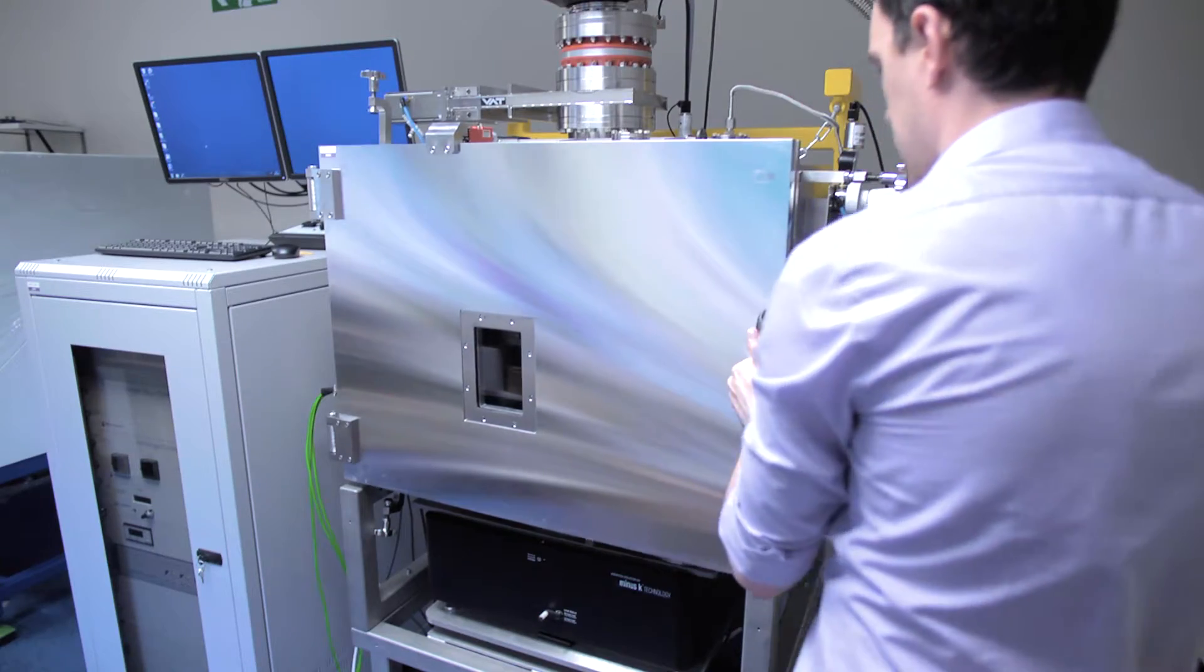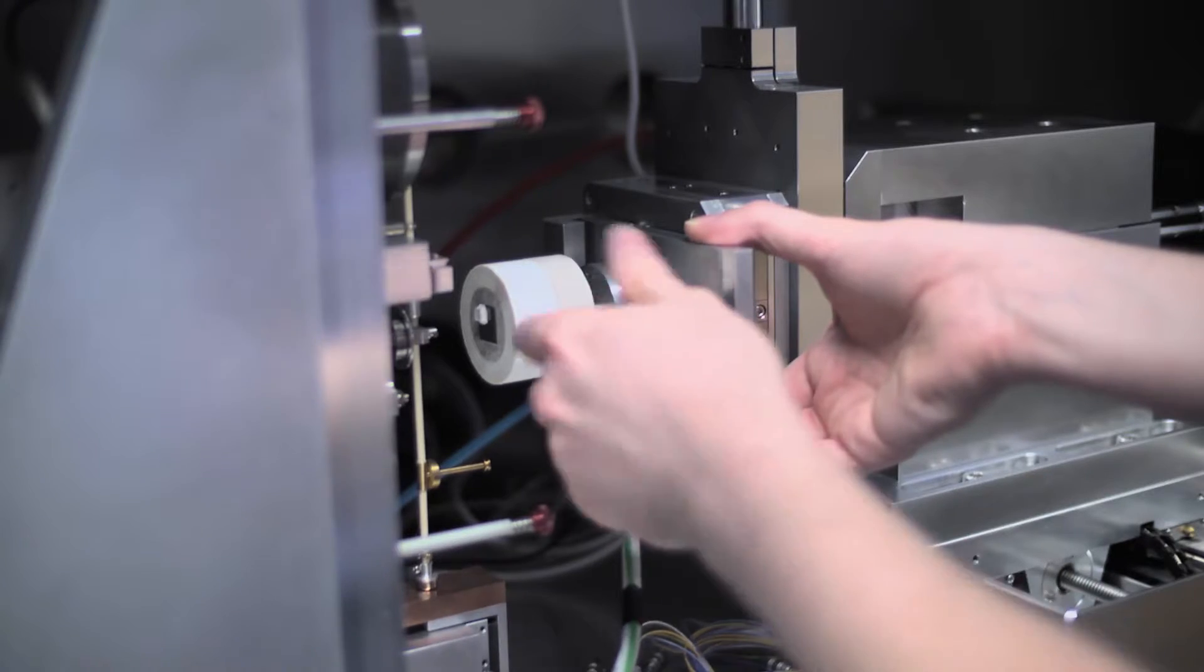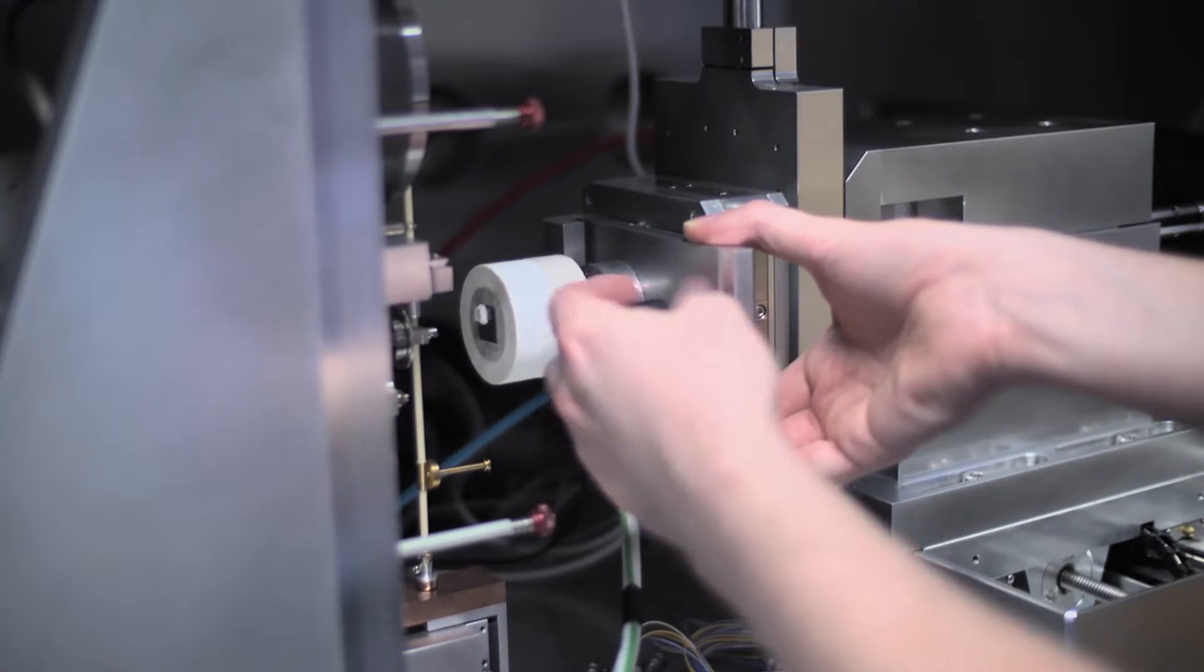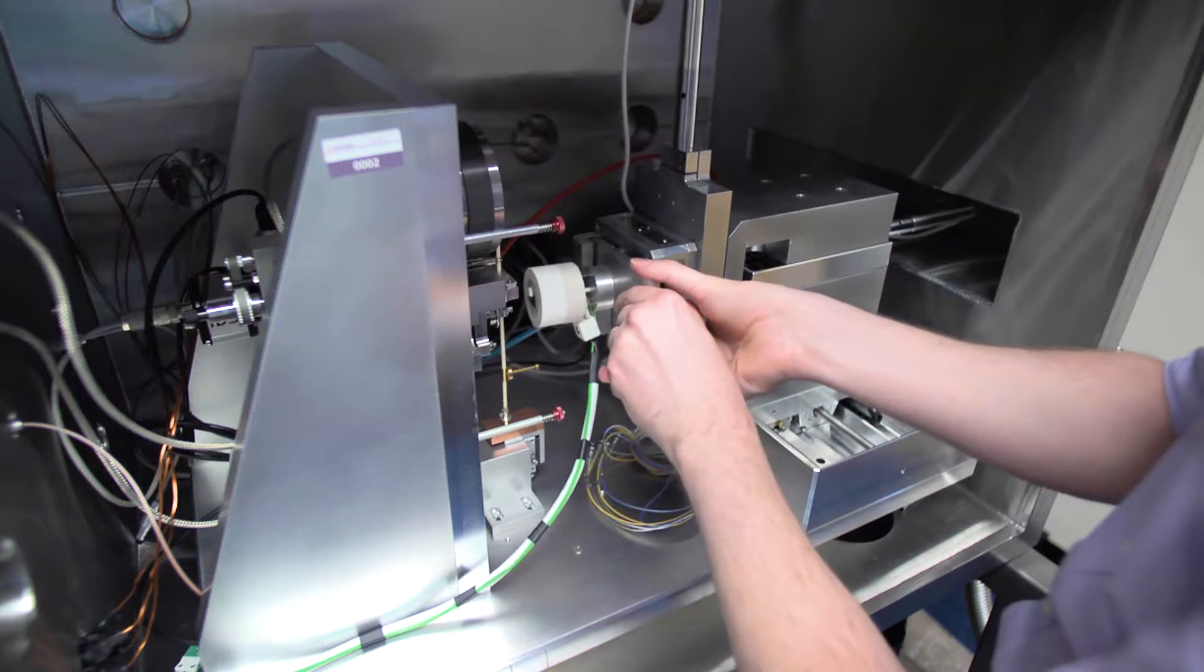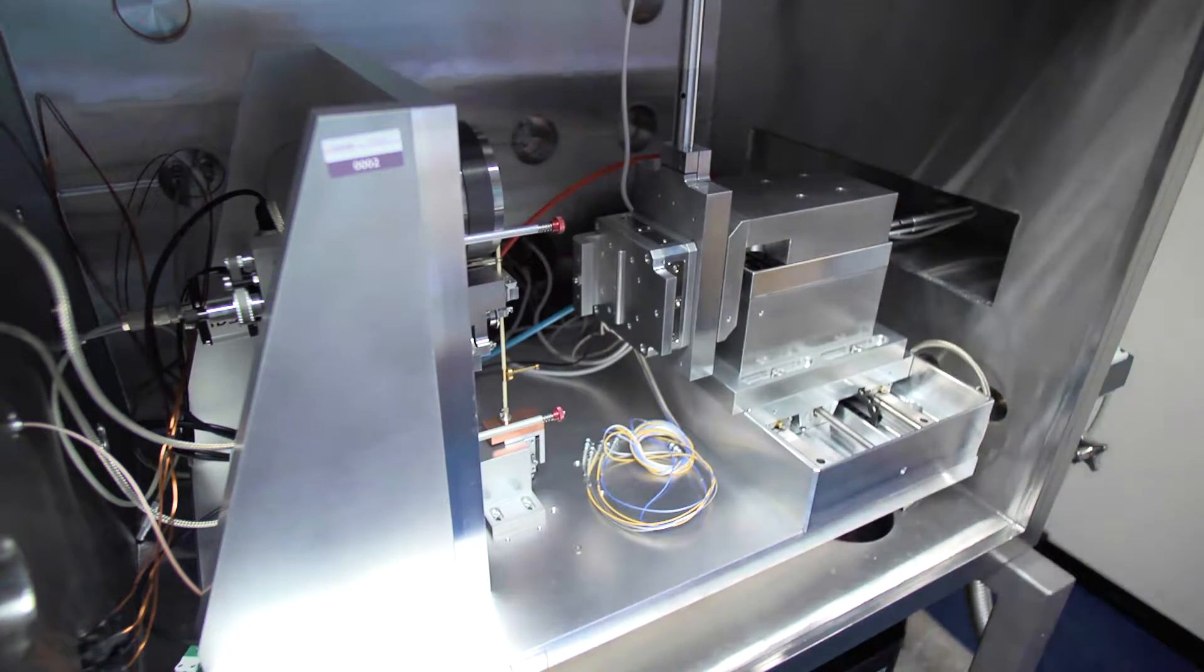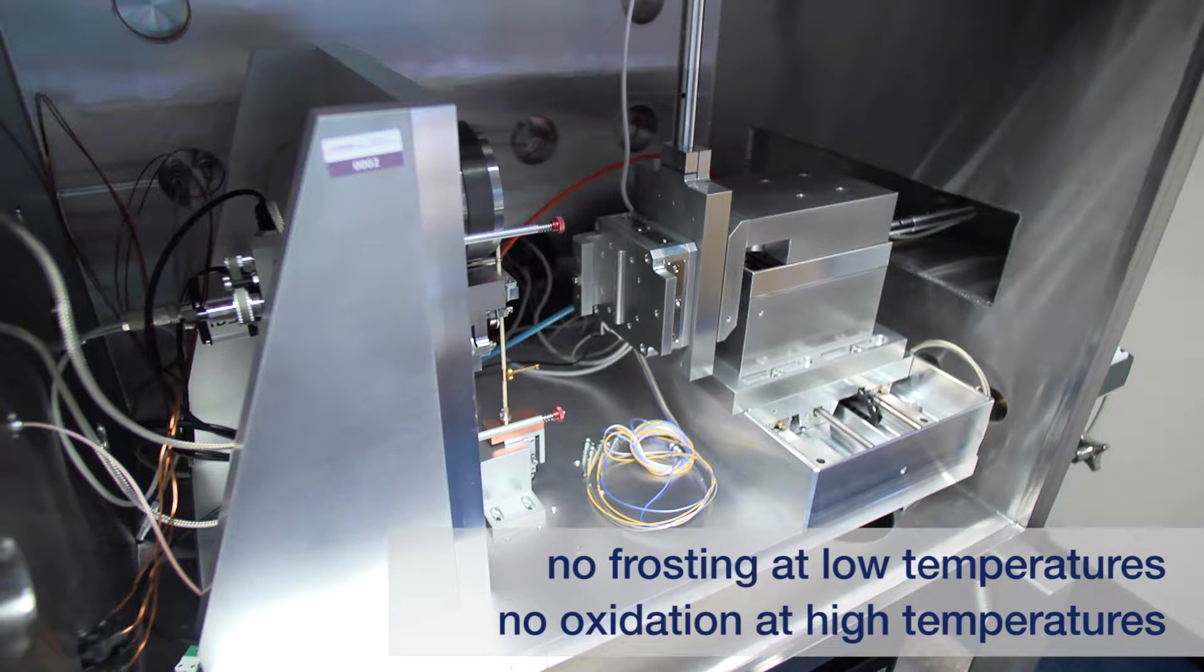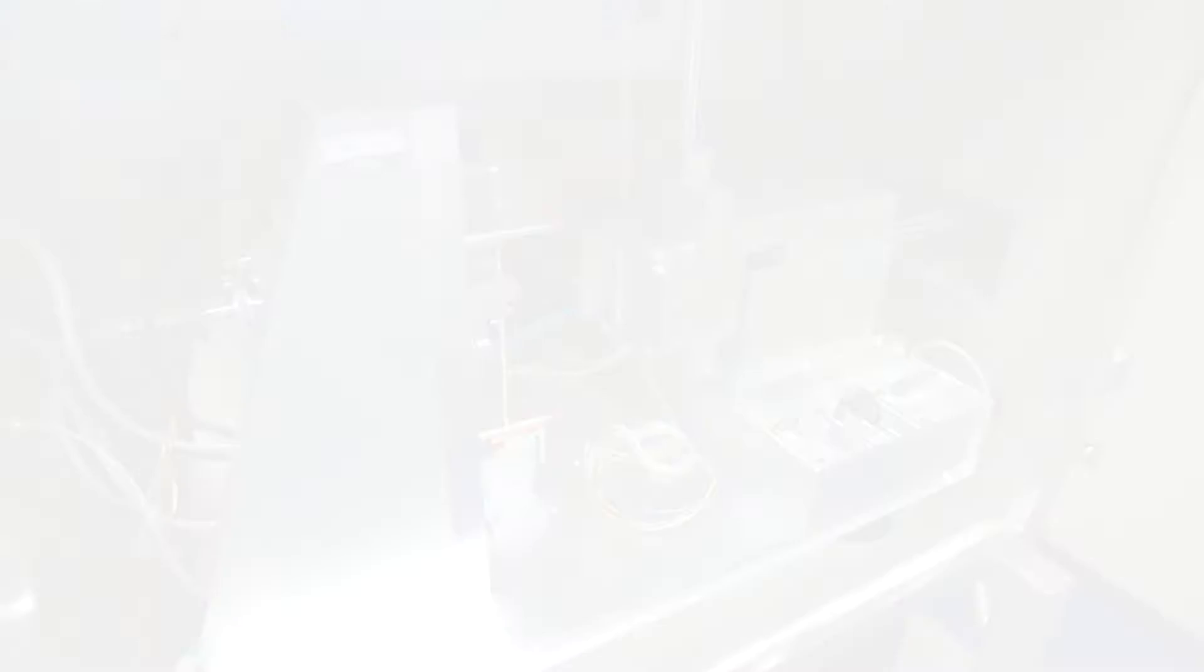Micromaterials has considerable experience in providing instruments capable of high and low temperature testing. Until recently, the limitations of these have been oxidation at high temperatures and frosting at sub-zero temperatures. Testing under vacuum removes these limitations and allows further expansion of the temperature capabilities of the nanotest range.